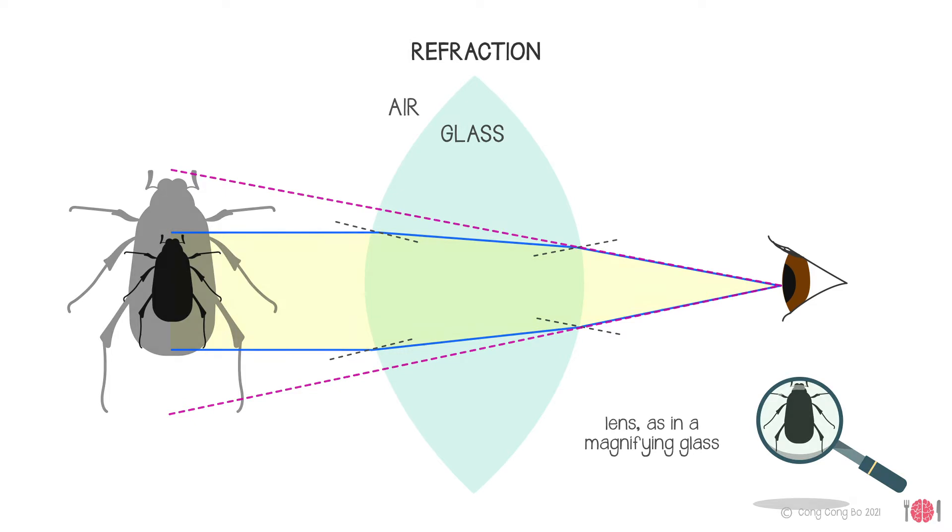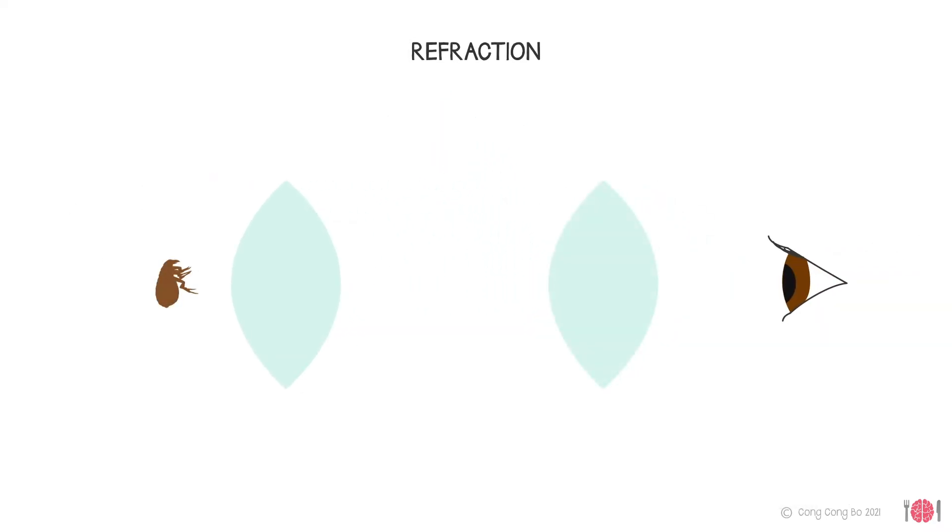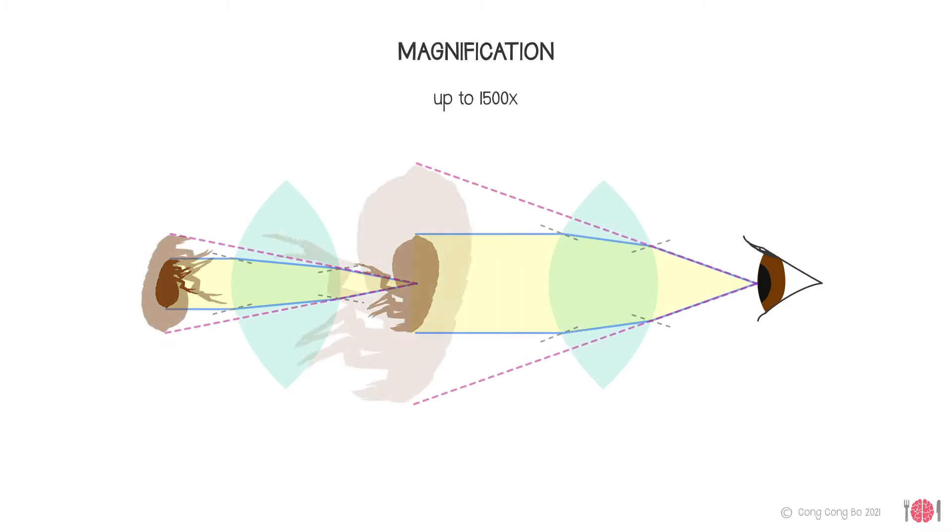The modern light microscope dates back to the 1600s. It contains a series of lenses which magnify a magnified image and can therefore achieve a magnification of up to 1,500 times.